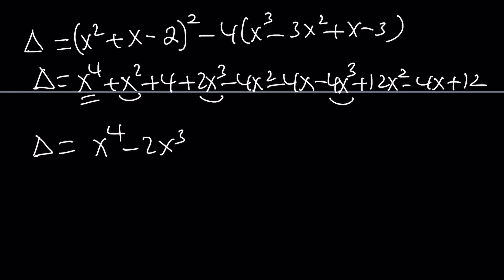And then how many x² do I have? I have 1x² plus 12, that's 13 minus 4 is going to make 9x². And then I have to do x next, which is -4 and -4, that's going to make -8x. And finally I got my constants: 4 + 12 which is equal to 16.